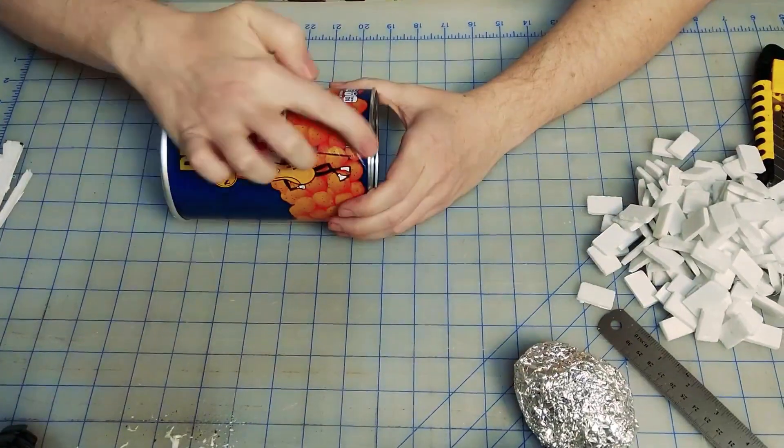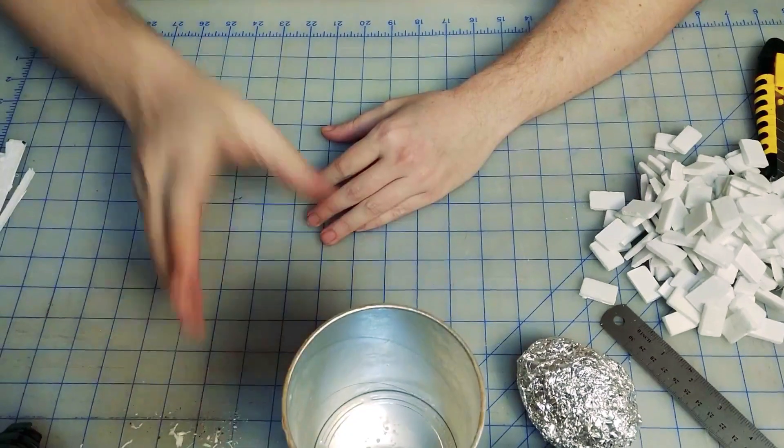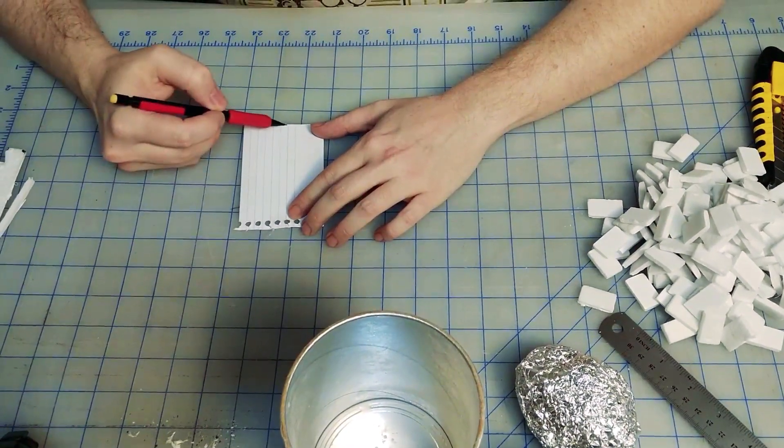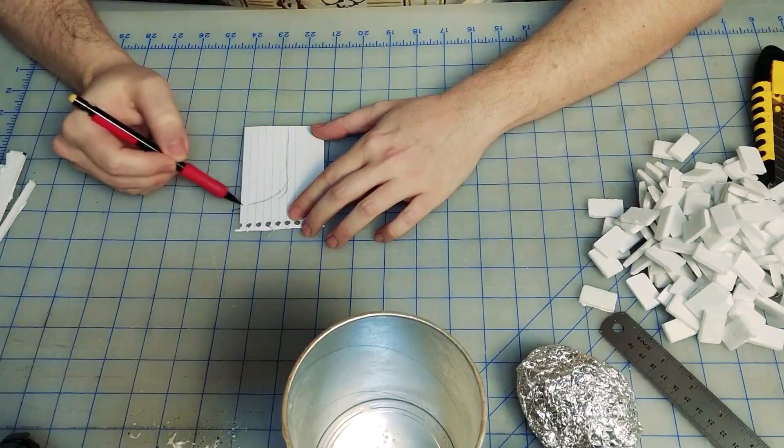Take a planter's cheese balls container. Jalapeno cheddar variety is disgusting, by the way. We're going to plan out a door to cut out from the middle of it.